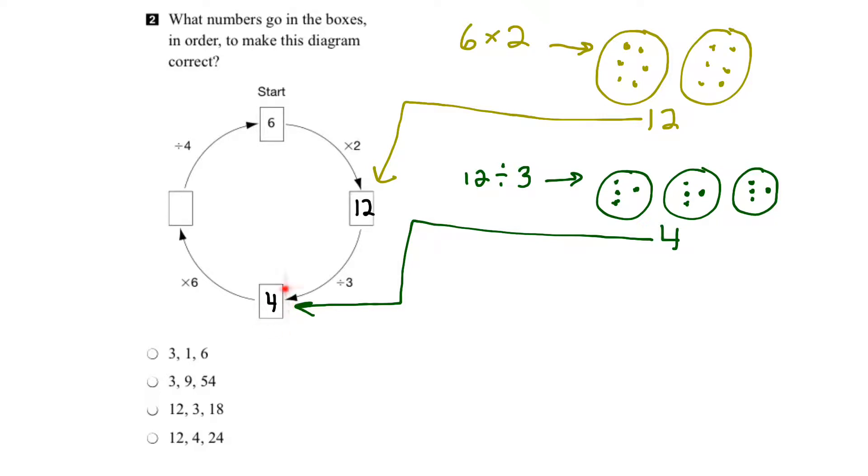So next, we have to take 4 times 6, and that means that we're going to take 4 times 6 means 6 groups of 4. So let me make 6 groups, 1, 2, 3, 4, 5, 6, and put 4 units in each one of them.